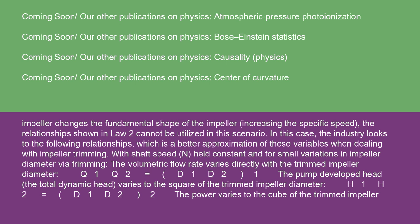which is a better approximation of these variables when dealing with impeller trimming. With shaft speed N held constant and for small variations in impeller diameter via trimming, the volumetric flow rate varies directly with the trimmed impeller diameter. Q1/Q2 equals D1/D2.